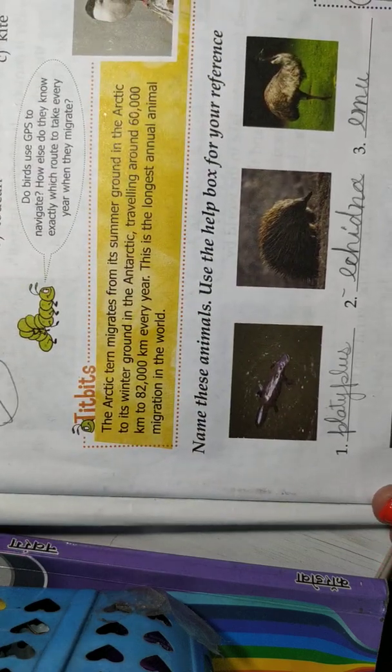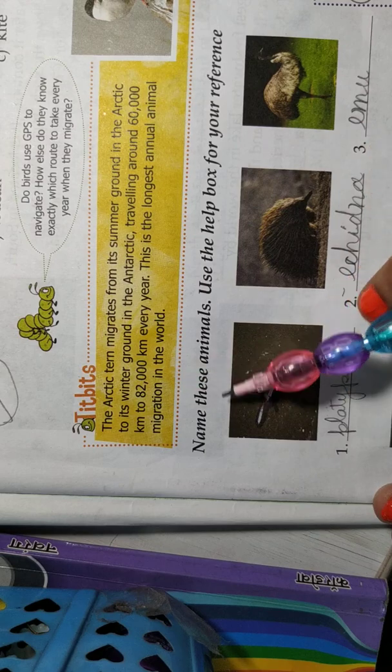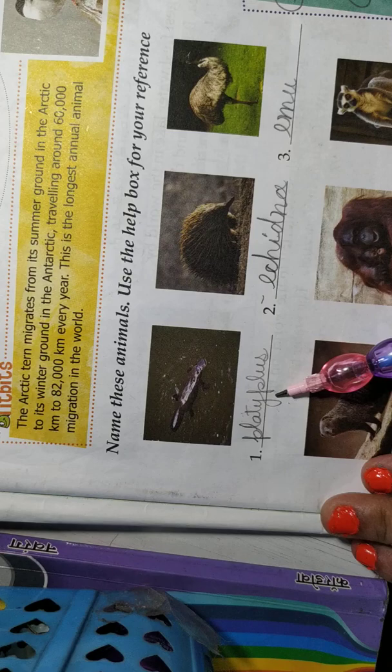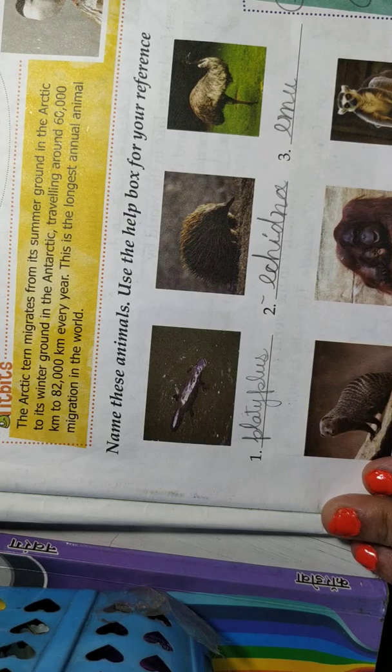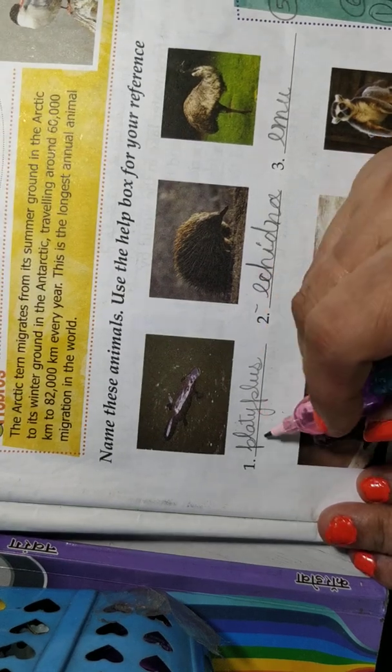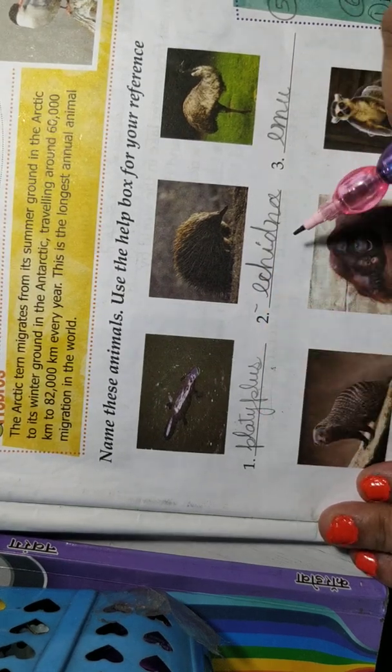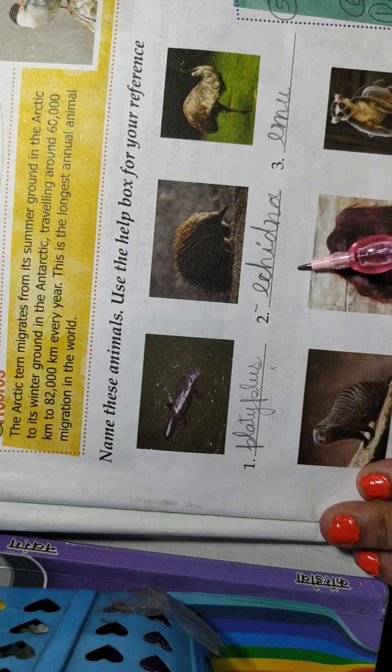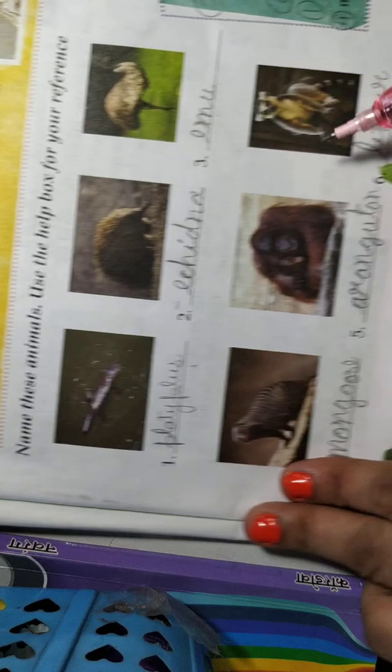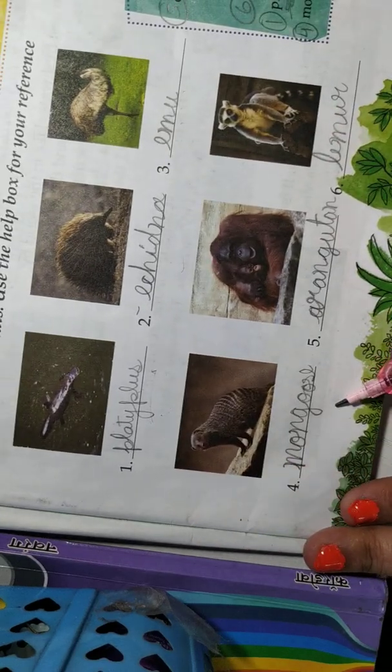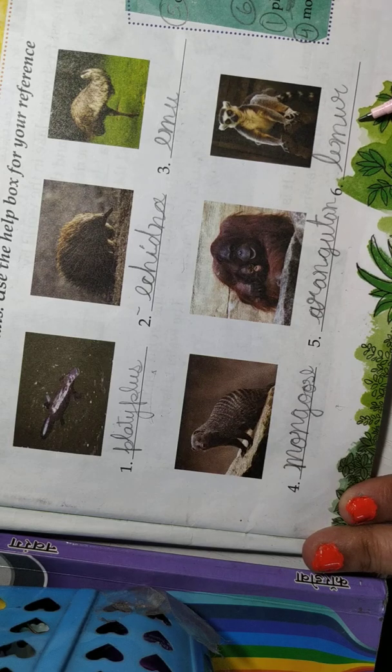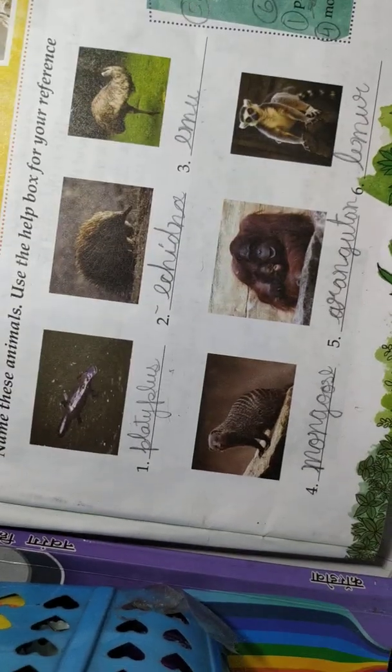Now, we will come to the tidbits. And below that, name these animals. Use the help box for your reference. So, first animal, platypus. Platypus. We will write number one for platypus. Second is echidna. Third is llama. The third one is emu. And fourth one is mongoose. Fifth one is orangutan. And sixth one is lemur.